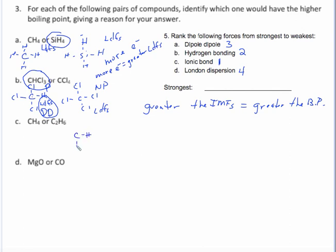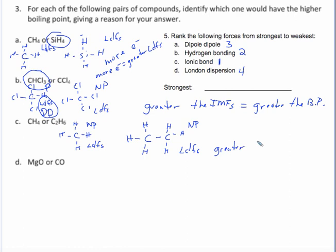CH4 versus C2H6 — you draw them both. After you draw it, you would see that both are nonpolar. Because they're both nonpolar, they both have London dispersion forces. But because there are more electrons in C2H6, it has greater London dispersion forces when compared to CH4. Because C2H6 has greater intermolecular forces due to having more electrons, it's going to have the higher boiling point.